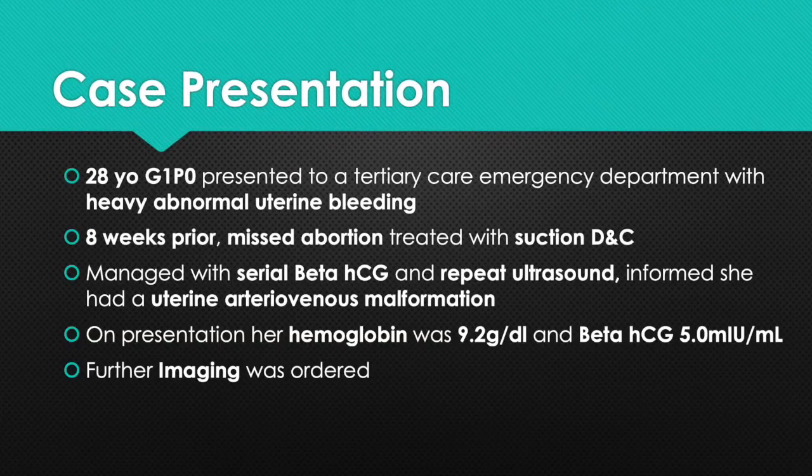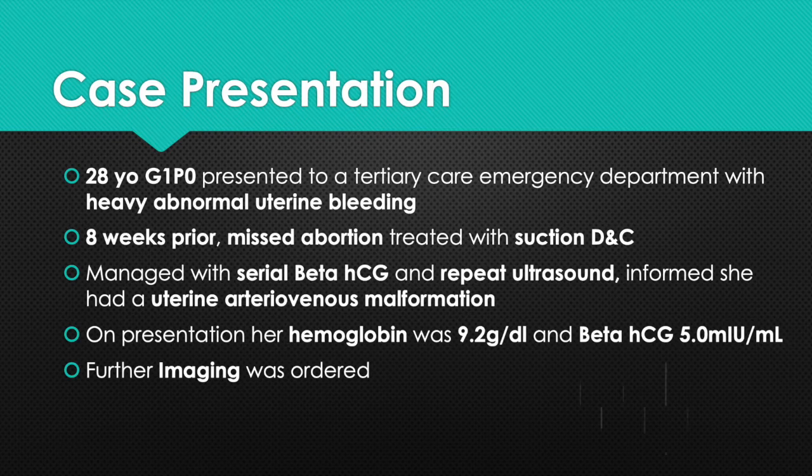A 28-year-old G1P0 presented to a tertiary care emergency department with heavy abnormal uterine bleeding. Eight weeks prior, she had a missed abortion treated with a suction DNC. She was managed with serial beta-HCGs and on repeat ultrasound was informed she had a uterine arteriovenous malformation. On presentation, her hemoglobin was 9.2 and her beta-HCG was 5.0. Further imaging was ordered.